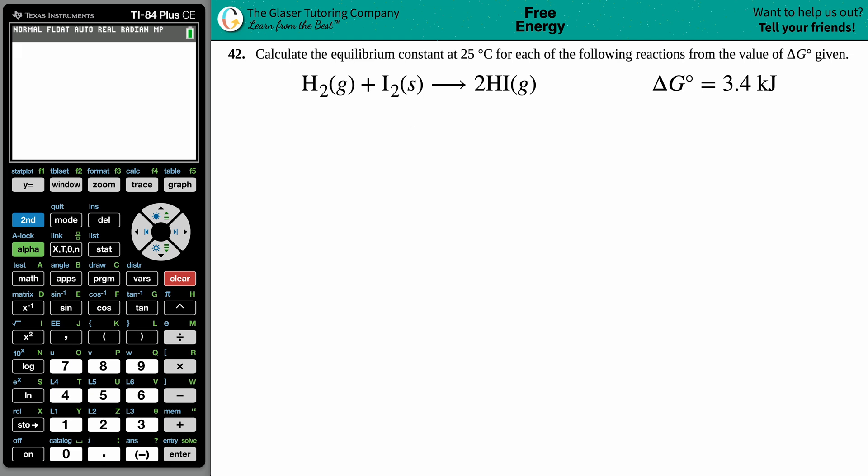Number 42: Calculate the equilibrium constant at 25 degrees Celsius for each of the following reactions from the value of delta G° given. We have H2 gas, hydrogen gas, plus iodine a solid, I2(s), yields 2HI gas.